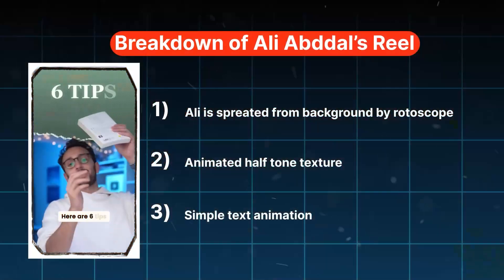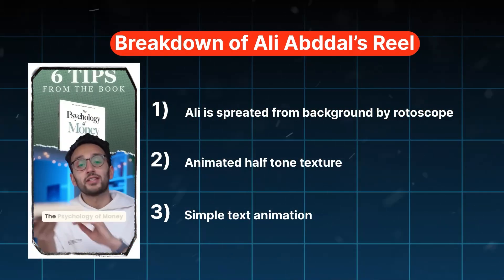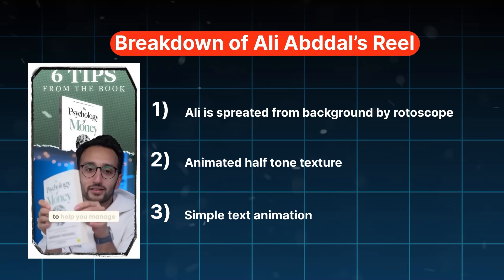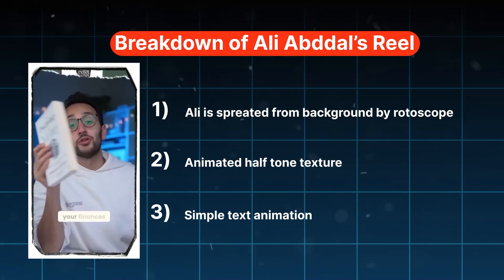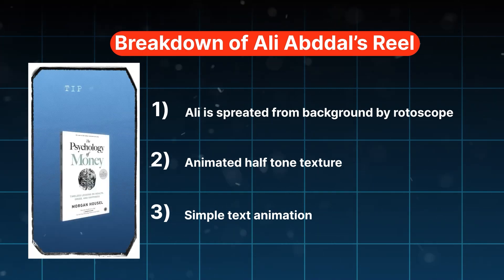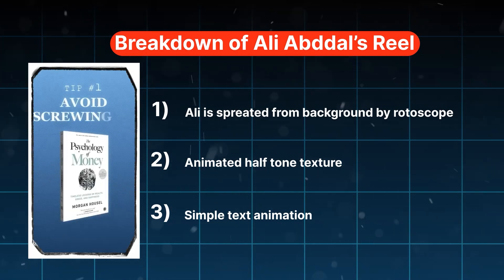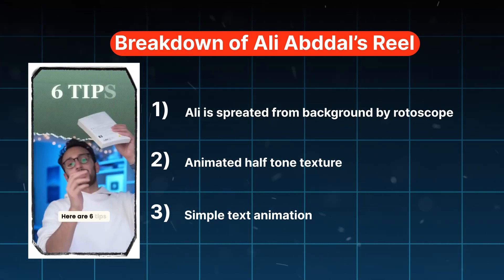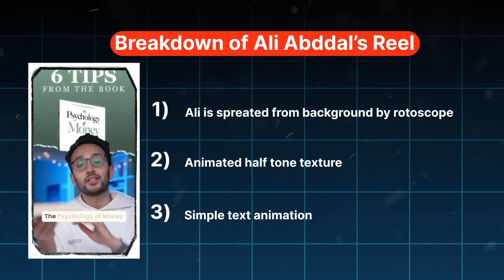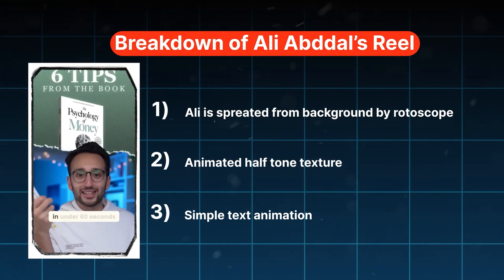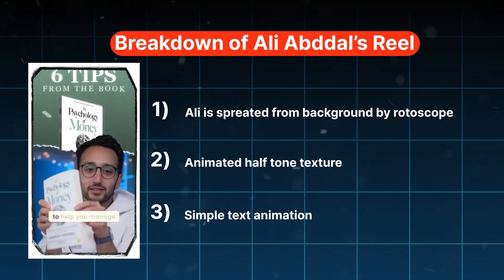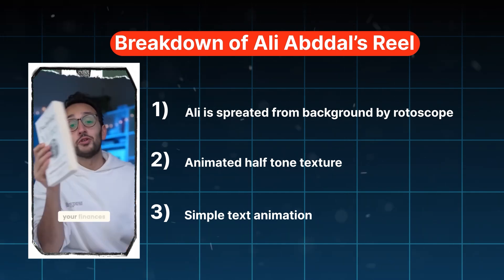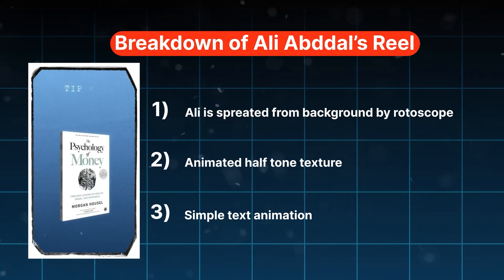In order to create the reel like Ali Abdaal we need to do 3 things: first we need to remove the background so we can add the assets behind his head, then we need to add the halftone texture, and lastly we can animate the text.